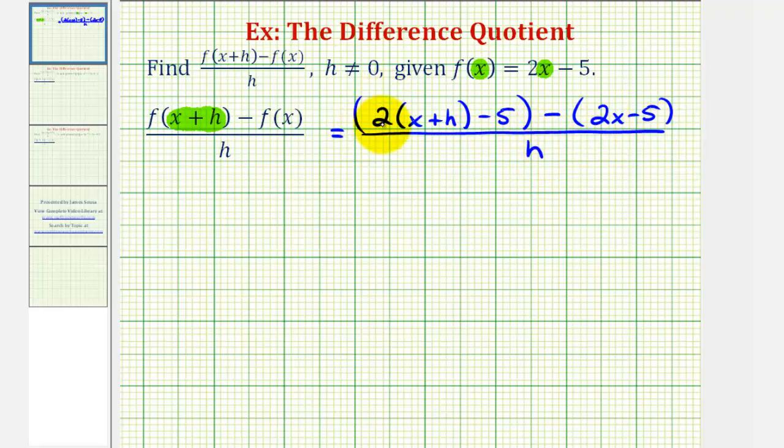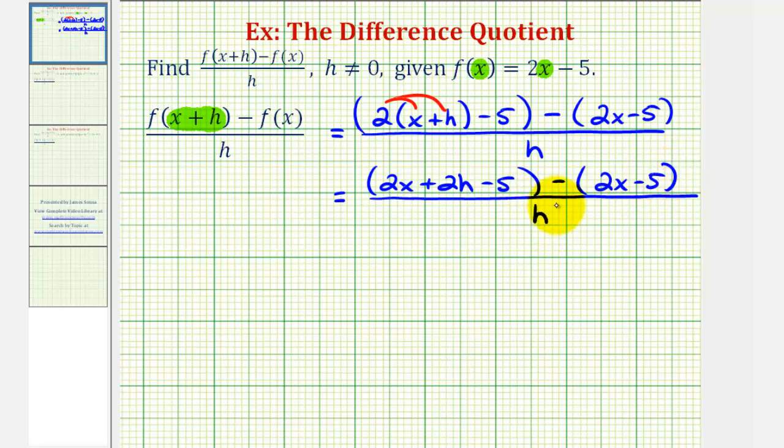Now let's begin to simplify f of the quantity x plus h by distributing two here. So we'd have two x plus two h minus five and then minus the quantity two x minus five divided by h.